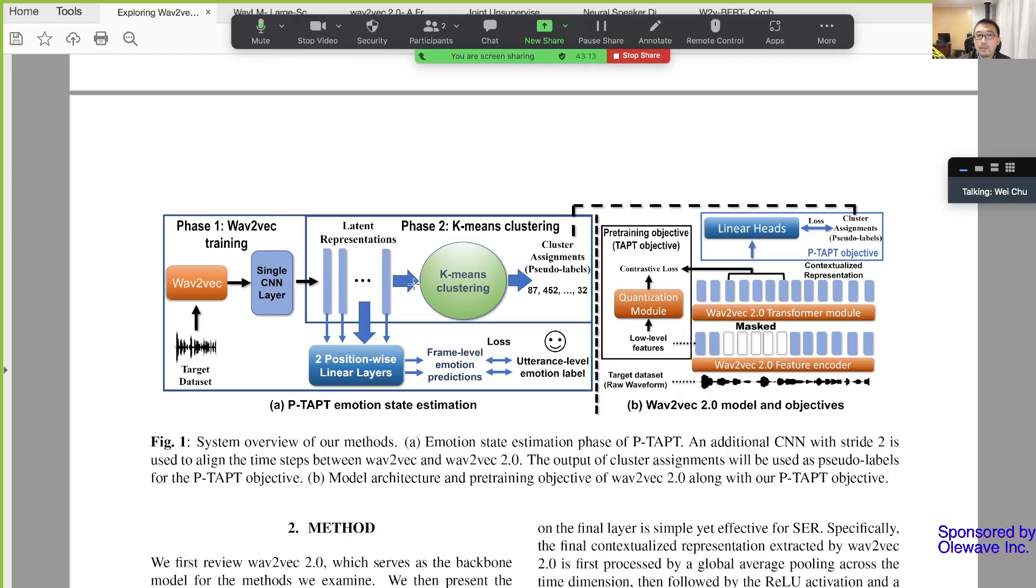And then they do k-means clustering. Fairly straightforward. After this, they get cluster assignments, which they call pseudo-labels.